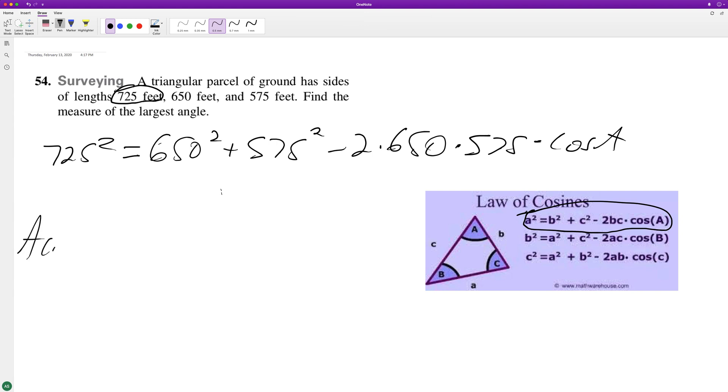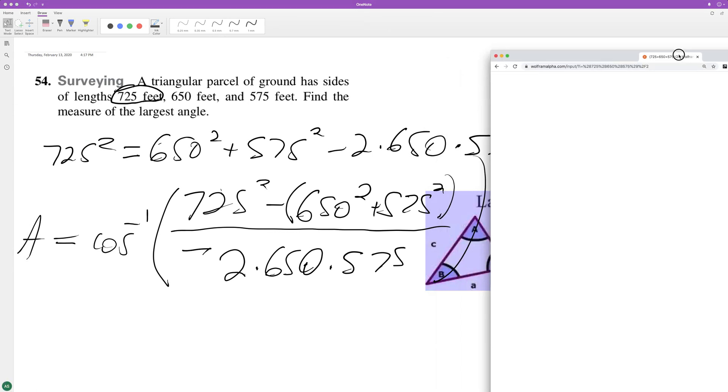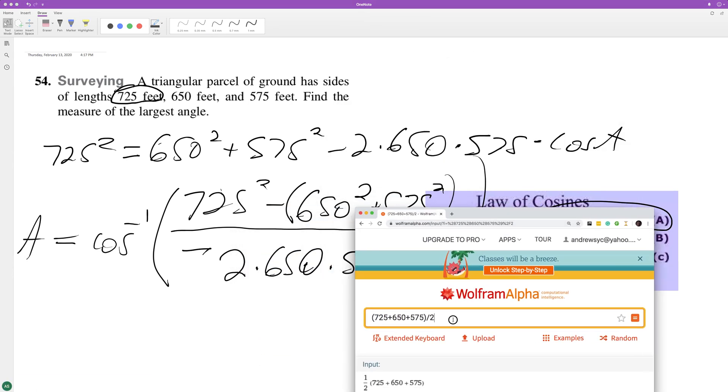So A is just gonna be equal to the arccosine of 725 squared minus 650 squared plus 575 squared, and all this over negative 2 times 650 times 575. I have no idea what it's gonna be but we'll figure it out.